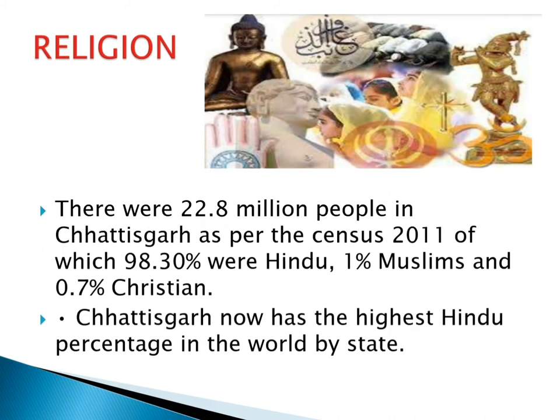Religion: There were 22.8 million people in Chhattisgarh as per the census 2011, of which 98.3% were Hindu, 1% Muslim, and 0.7% Christian. Chhattisgarh now has the highest Hindu percentage in the world by state.